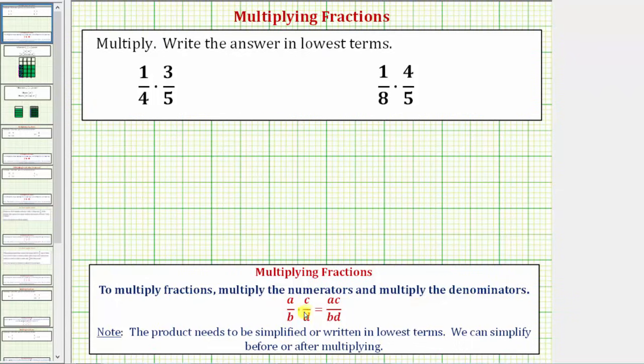So looking at our notes here, these are the two fractions we're multiplying. The numerator would be a times c, and the denominator would be b times d. However, the product does need to be in simplified form or written in lowest terms, and we can simplify before or after multiplying.